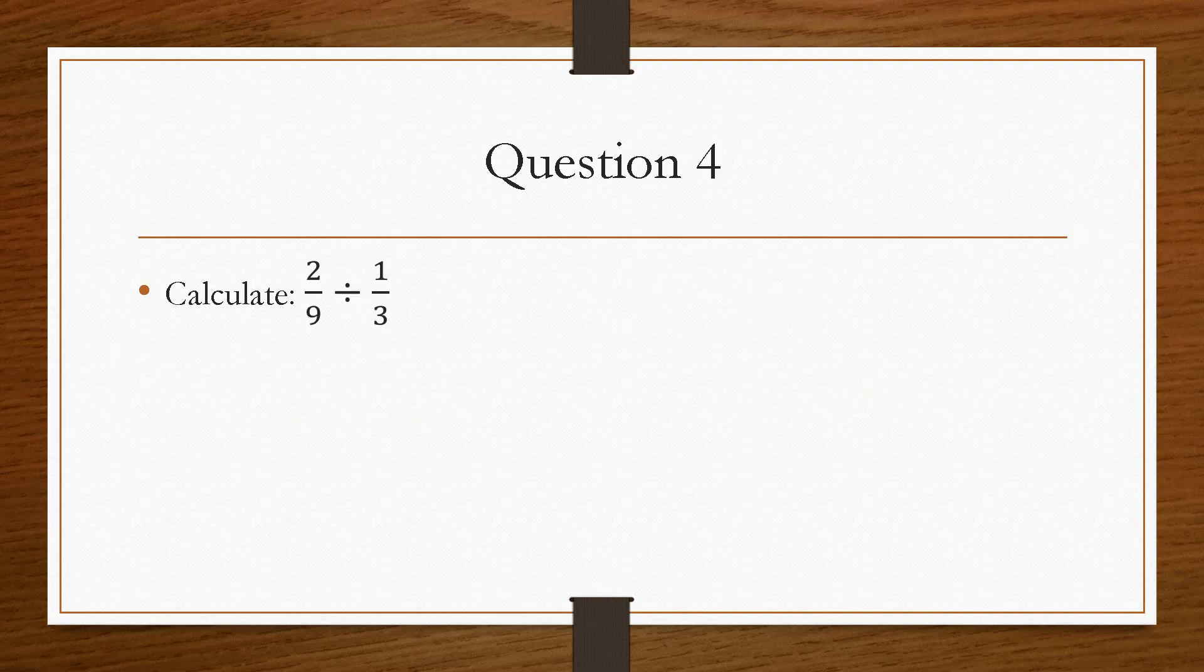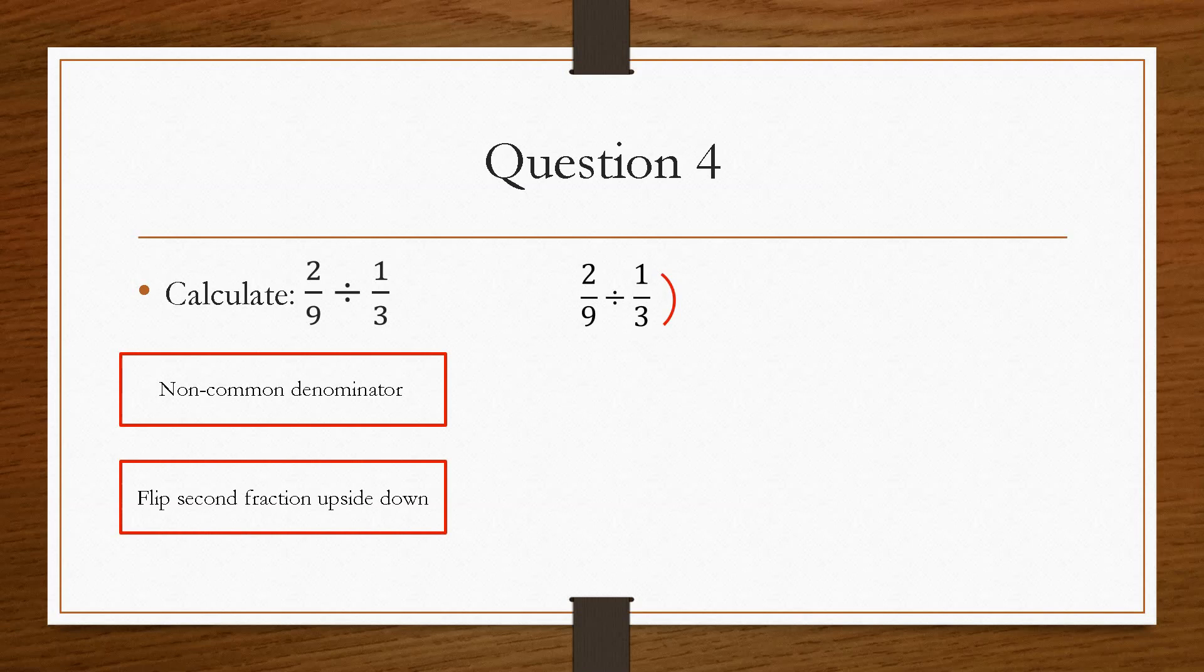And then lastly, if we look at question 4, this one is a divide. So it's asking us 2 over 9 divided by a third. Now, from the start of the PowerPoint, we were told that when you divide fractions, you do not need a common denominator. However, you have a small trick that you must do when you divide fractions. And this only applies to dividing fractions. You must flip the second fraction upside down.